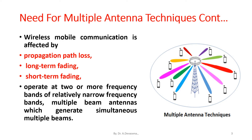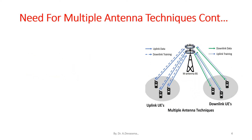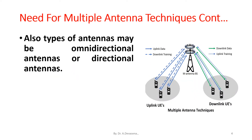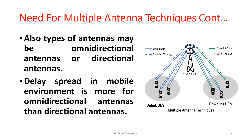Antennas can operate at two or more frequency bands of relatively narrow frequency bands. Multiple beam antennas generate simultaneous multiple beams. Types of antennas may be omni-directional antennas or directional antennas. Delay spread in mobile environment is more for omni-directional antennas than directional antennas.